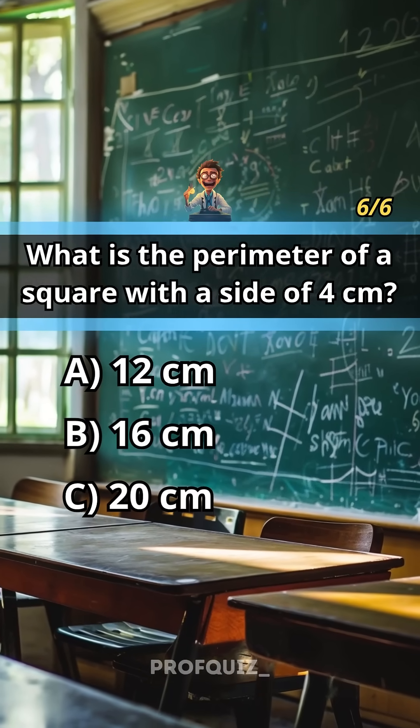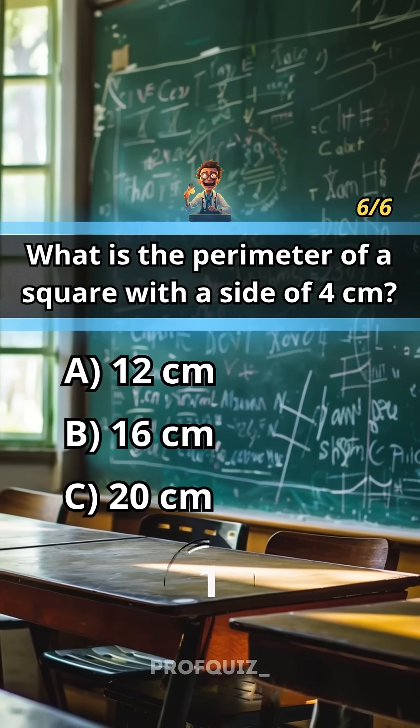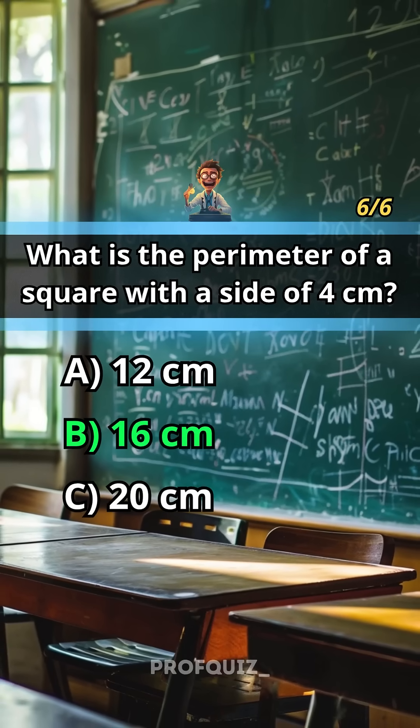What is the perimeter of a square with a side of 4 centimeters? Answer B, 16 centimeters. Share your score in the comments.